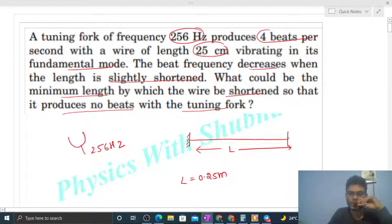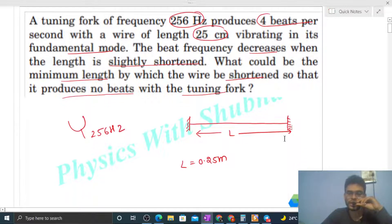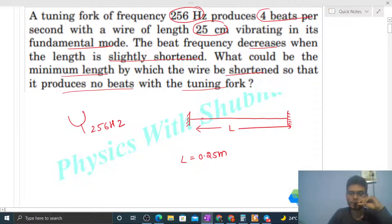Now you can assume the boundary condition. I am assuming both ends are fixed, right? You can assume one end open and one end fixed and follow the same procedure. Eventually you'll get the same answer. So I've assumed both ends fixed. It means there will be nodes, and for fundamental mode of vibration you draw a single loop. What is the length of one loop? That is lambda by 2.